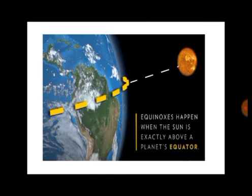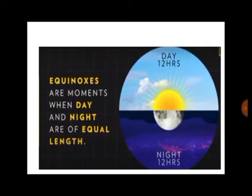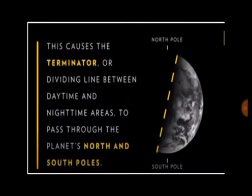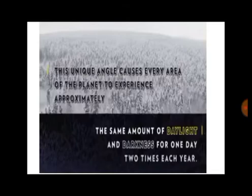Equinoxes happen when the sun is exactly above a planet's equator. Equinoxes are moments when day and night are of equal length — that is, 12 hours of day and 12 hours of night. There are two equinoxes every year, in September and March. When the sun shines directly on the equator and the length of day and night is nearly equal, we say that it is an equinox. This equinox causes the terminator, the dividing line between daytime and nighttime areas, to pass through the planet's north and south poles. This unique condition causes every part of the planet to experience approximately the same amount of daylight and darkness twice each year — in March and September.